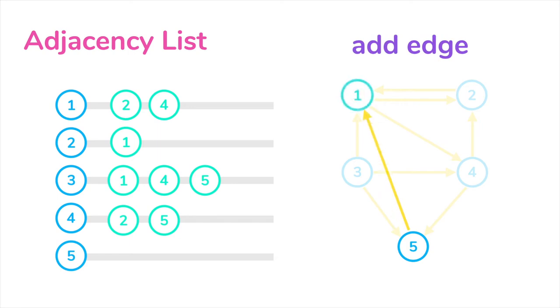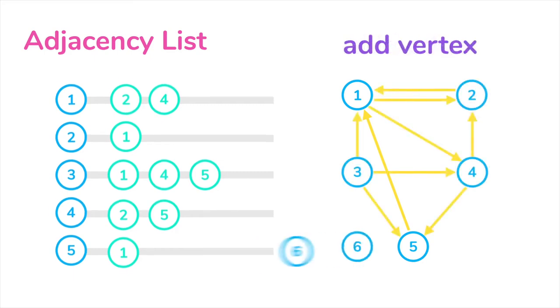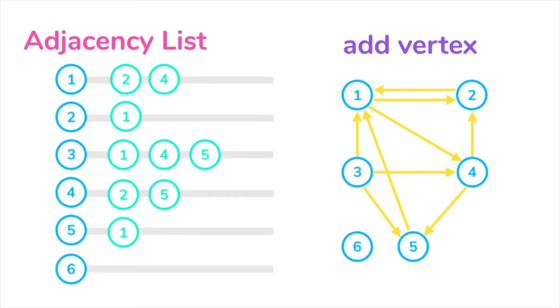When we want to add a new edge to the graph, we can just add a new element to the adjacent list. And when we want to add a new vertex, we just need to add a new vertex to the graph list. That is how you can represent a graph with the adjacency list.